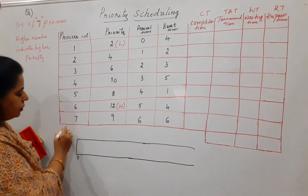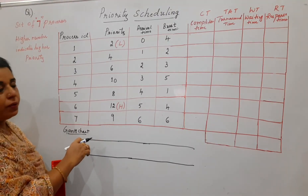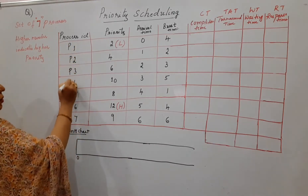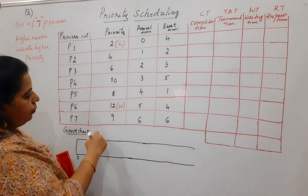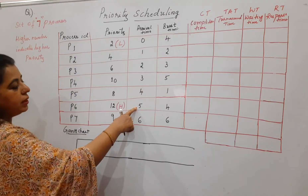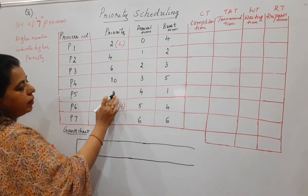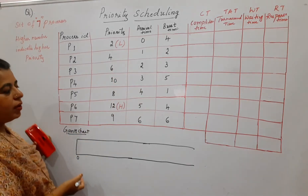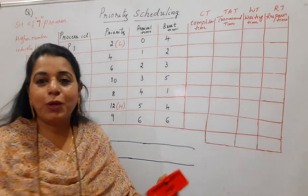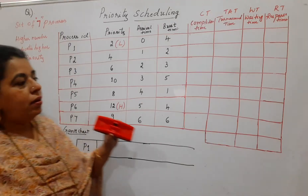We write zero on the Gantt chart and need to schedule the first process. Since higher number means higher priority, process P6 has the highest priority (12). However, P6 has not arrived at time 0, and the next highest priorities — 10 and 8 — also haven't arrived yet. So the only available process is P1, which has the lowest priority but must be scheduled first.